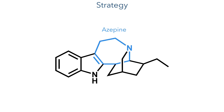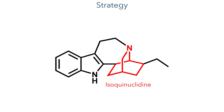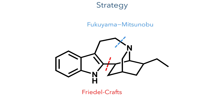The most characteristic structural feature of the iboga alkaloids is the central seven-membered azepine ring, which is fused to both an indole system and a bicyclic isoquinuclidine core. To construct this azepine ring, the authors plan to use three different carbon-nitrogen bond-forming reactions: a Friedel-Crafts reaction, a Fukuyama-Mitsunobu reaction, and an intramolecular SN2 substitution.